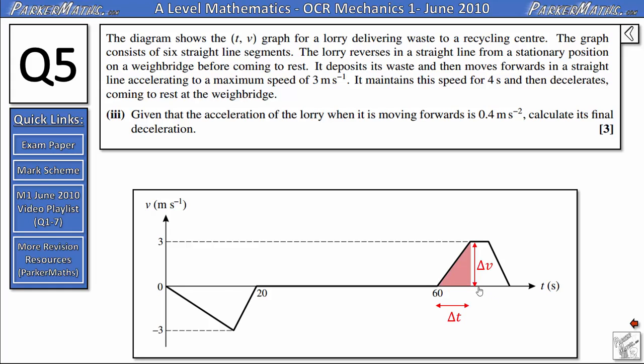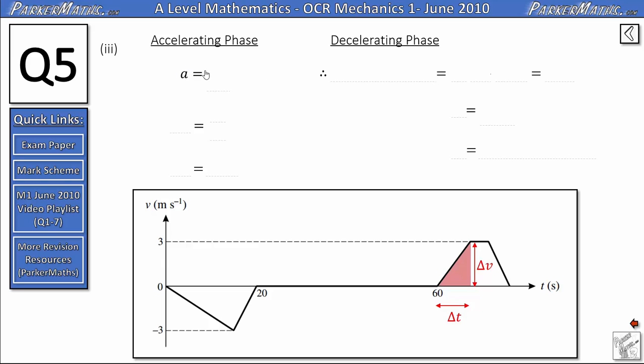To calculate the gradient of a line, you do the distance up divided by the distance across. So here we're looking at the change in velocity divided by the change in time, which is actually the definition for acceleration. So here's the formula we're going to use, a equals delta v over delta t.